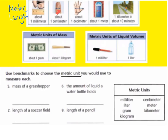One centimeter would be about the width of your finger. One decimeter would be about the width of your hand. About one meter would be the width of a door. And one kilometer is if you were to walk for about ten minutes. For metric units of mass: about one gram would be the mass of a dollar bill — very, very light. About one kilogram would be the mass of a baseball bat. For metric liquid volume: one milliliter would be about one drop from a dropper, and one liter would be about the size of a jug of Gatorade.